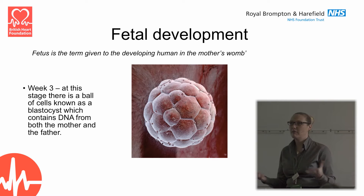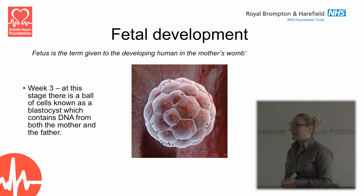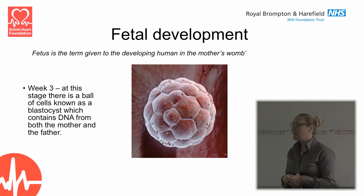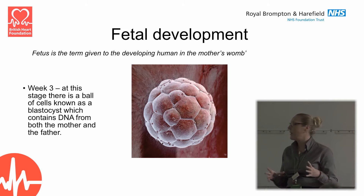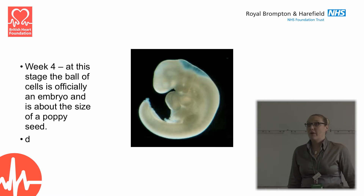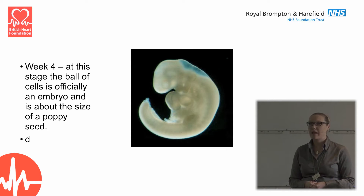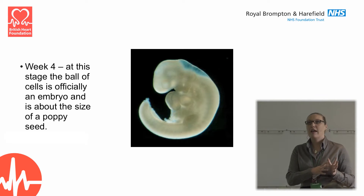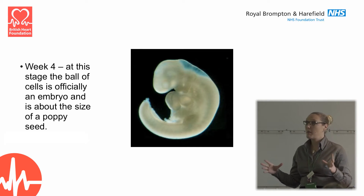At week three of pregnancy — so before most people even know they're pregnant — we have a ball of cells known as a blastocyte, which contains DNA from both the mother and the father. By week four, this ball of cells is officially known as an embryo, which is what we call the fetus or baby as it's growing until it becomes a proper baby in the womb.